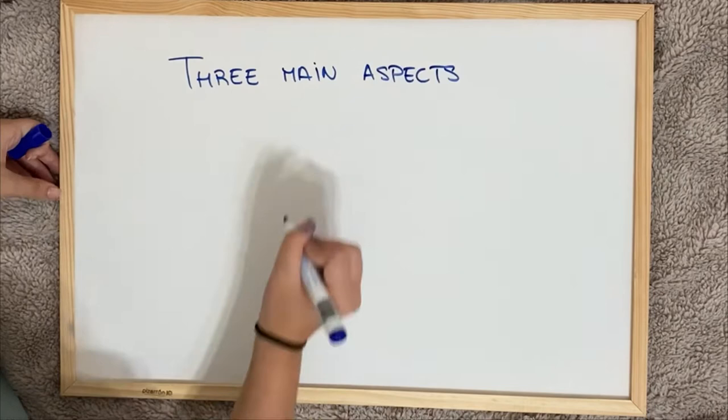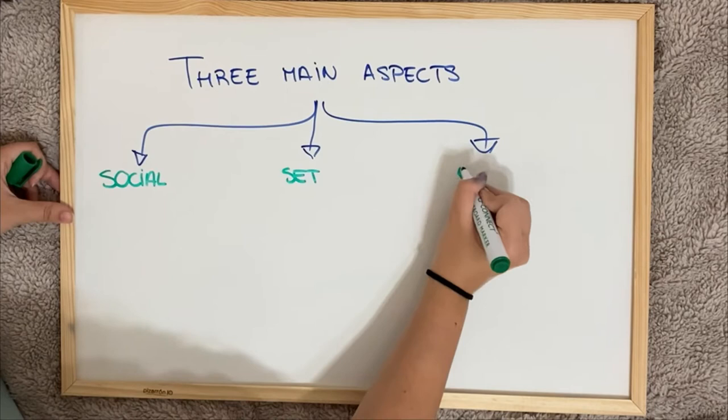To make this activity centre learning effective we have to take into account three main aspects: the social design, the set design and the epistemic design, which is related with the ACAD framework.